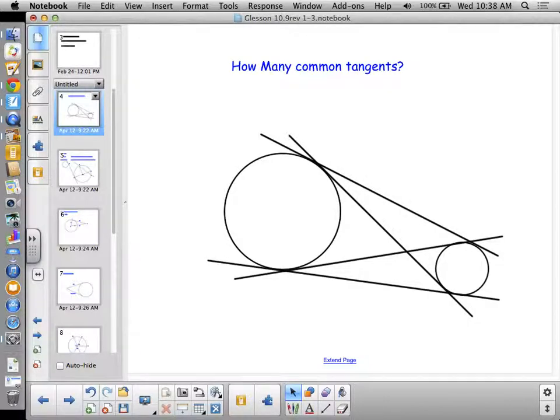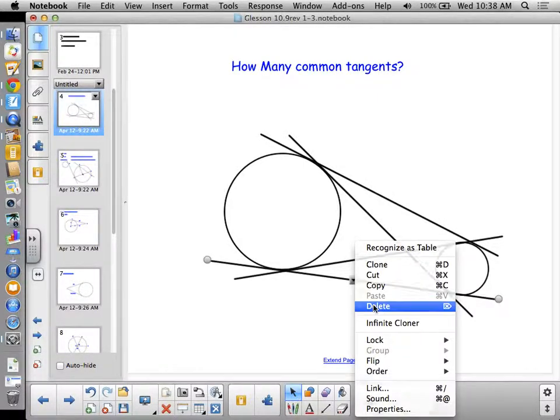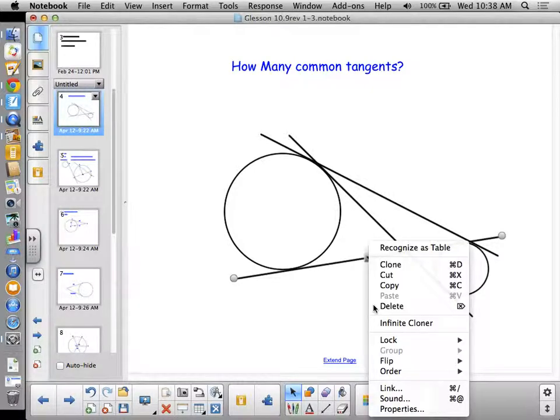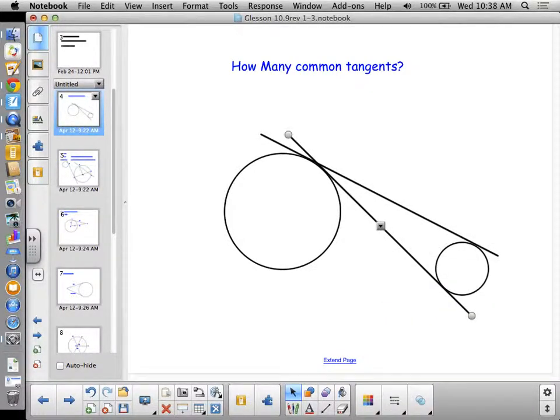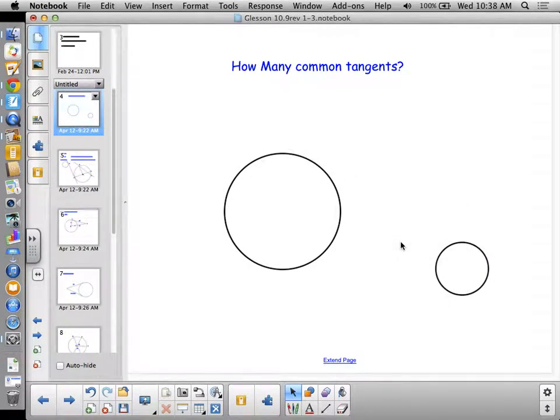So, there are four common tangents. What if I bring the two circles? So, instead of being like this, now I'm seeing it drew them all. Now, I'm going to get rid of them all. This works. It's actually probably a little bit faster. What if the two circles like that, how many common tangents? One, two, three. Three. Because I've got the one that runs right down the point of tangency. How about now?